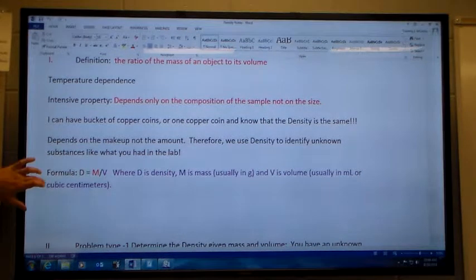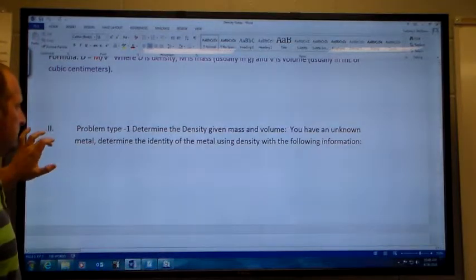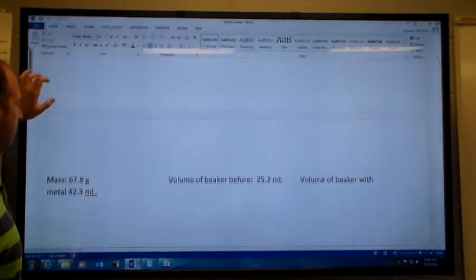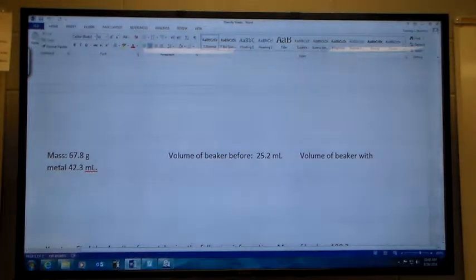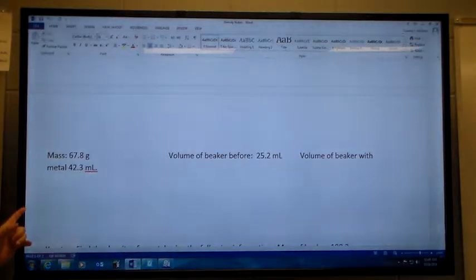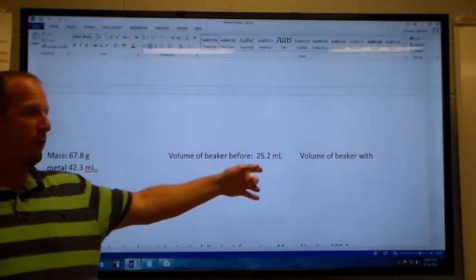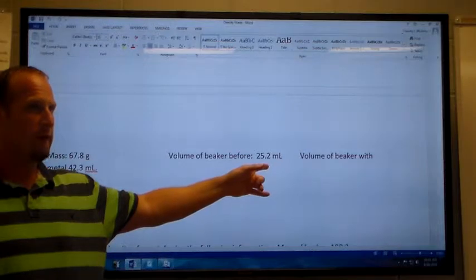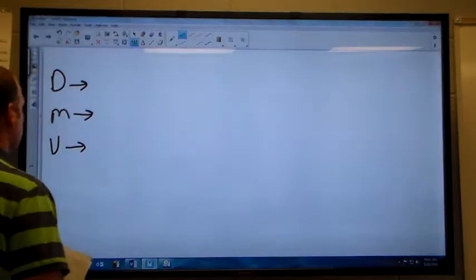Okay, so determine the density, given a mass and volume. Given this information, mass 67.8. So Hannah, are we doing mass by difference in this question or do we already have the mass? We already have the mass, okay, alright. Volume of the beaker before 25.2. Volume in the beaker and the metal, 42.3.